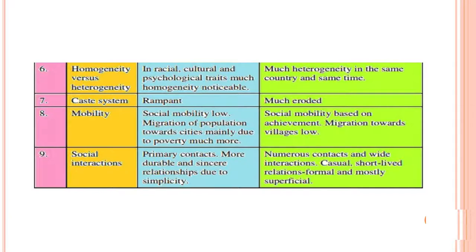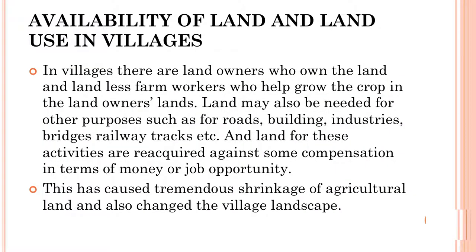Last, social interaction: primary contact, more durable and sincere relationships due to simplicity in rural society. But in urban society, numerous contacts and wide interaction result in casual, short-lived, formal and mostly superficial relationships. Now we come to the availability of land and land usage in villages.